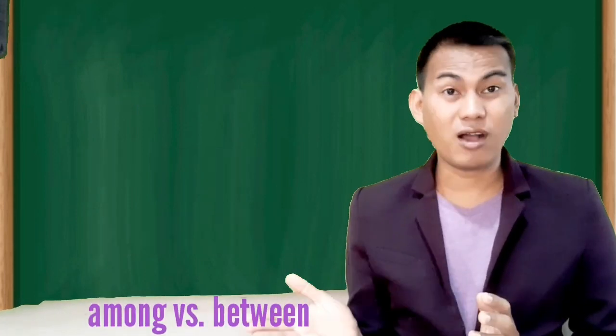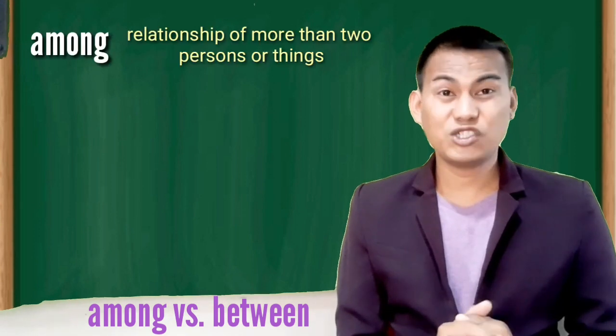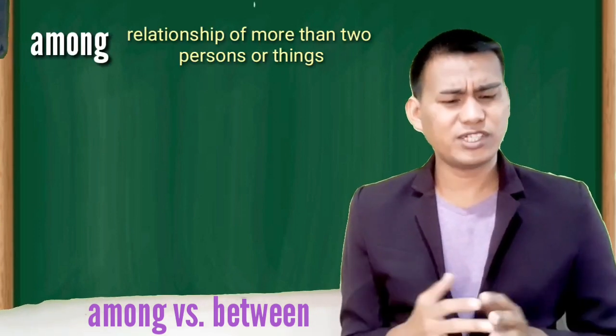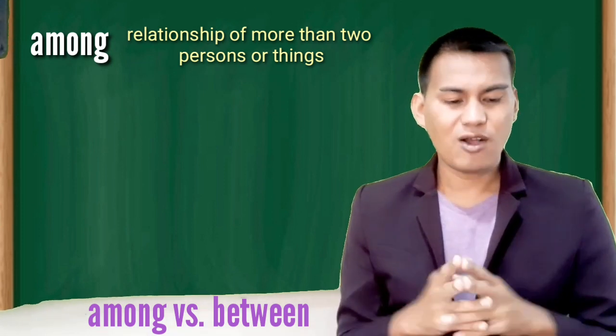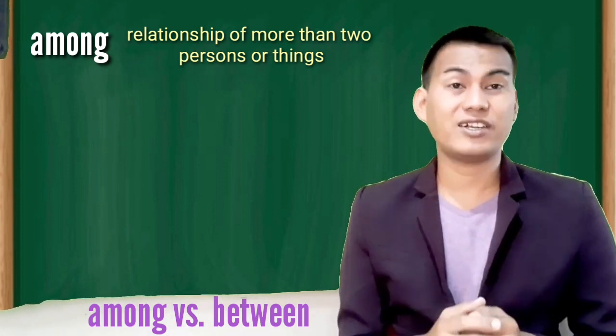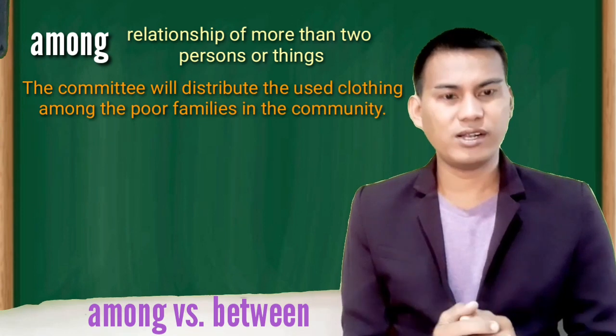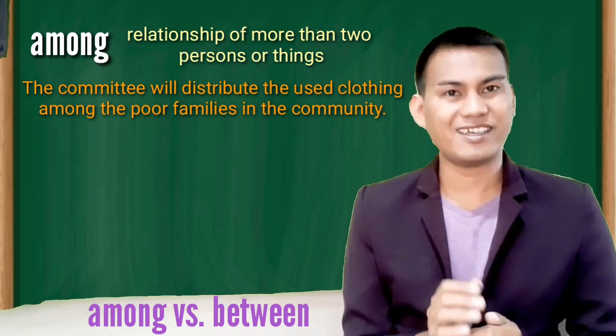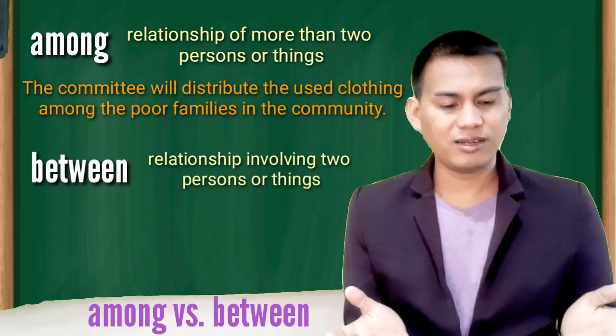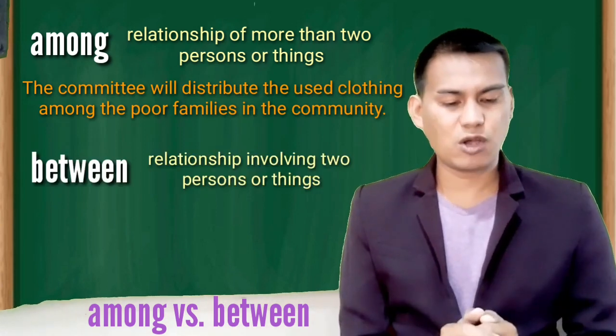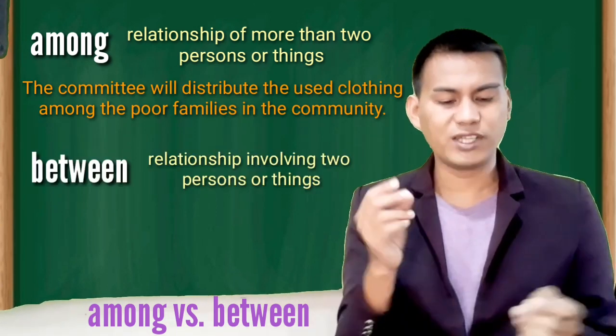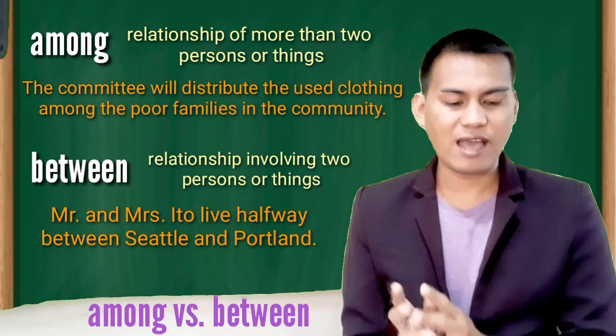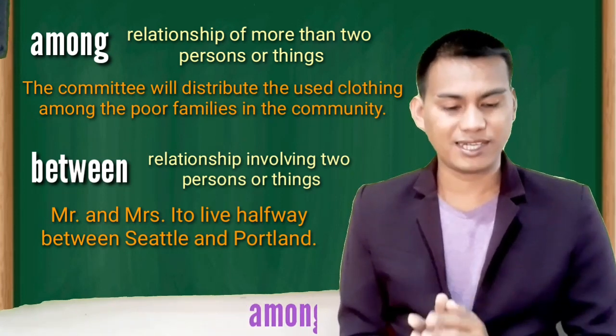Now let's talk about among versus between. In general, use among to show a relationship in which more than two persons or things are considered as a group. The committee will distribute the used clothing among the poor families in the community. In general, use between to show a relationship involving two persons or things. Mr. and Mrs. Ito live halfway between Seattle and Portland.